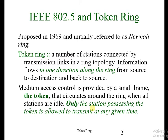In token ring, a number of stations are connected by transmission links in a ring topology. Information flows in one direction along the ring from source to destination and back to source. This is the definition of token ring — stations connected in a ring where information flows in one direction from source to destination and back.